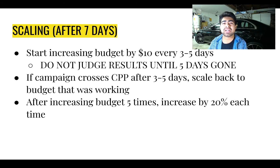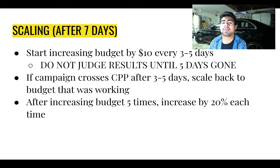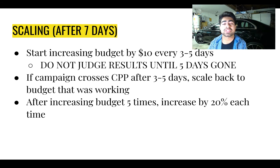After you've scaled about five times, you want to start increasing the budget by 20% each time. That is the general process for scaling — there's nothing too complicated. People usually like to complicate these things, but it is a very simple process, and the more you complicate it, the harder it becomes to understand what you're doing and to get profits.